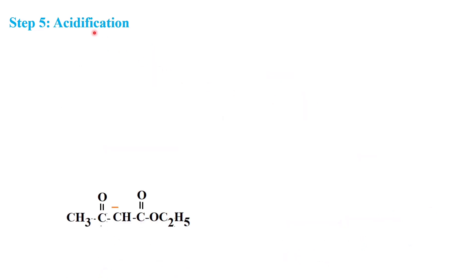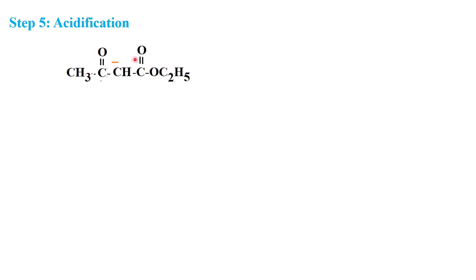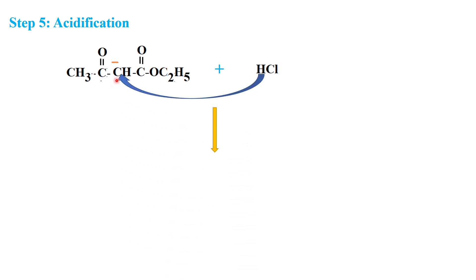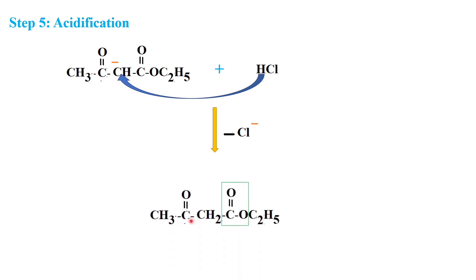Step 5 is acidification. The conjugate base of the ester — enolate ion 2 — is treated with HCl. A proton is added to the carbon bearing the negative charge, converting it to the final beta-ketoester product.